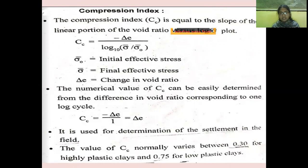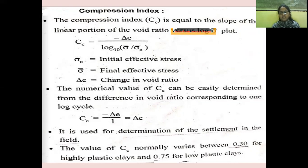What is the compression index? It involves very important formulas for solving problems. The compression index CC is equal to the slope of the linear portion of the void ratio versus log stress plot. CC is equal to delta E divided by log of sigma-dash divided by sigma-naught-dash, where sigma-bar represents effective stress.